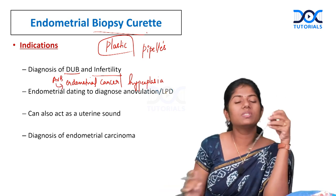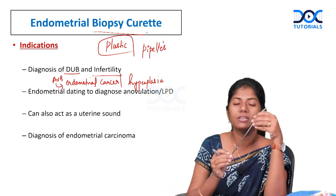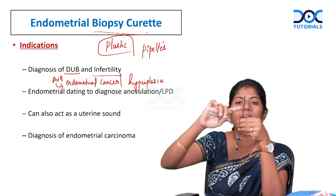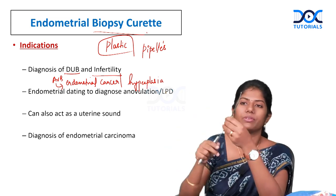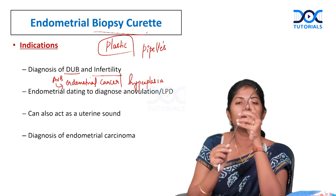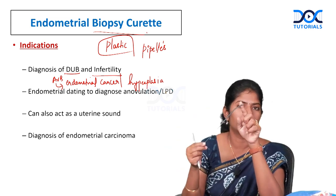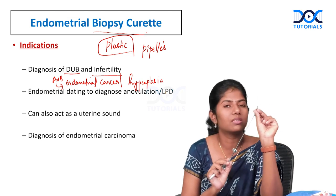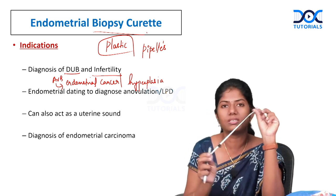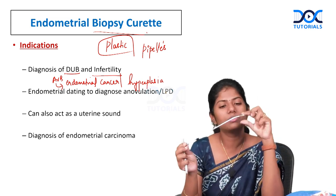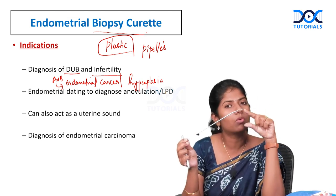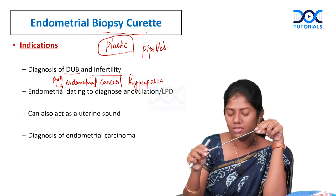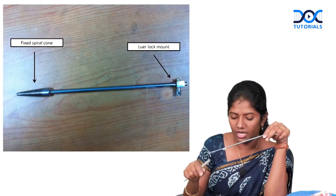The endometrial biopsy curette can also be used as a uterine sound because it has an angulation — it is bent at the tip.